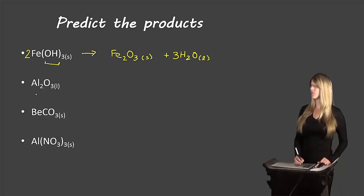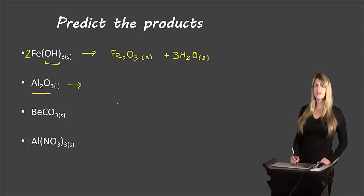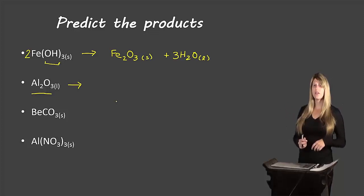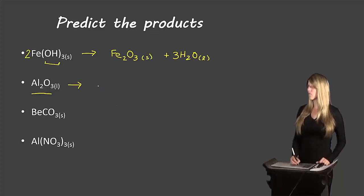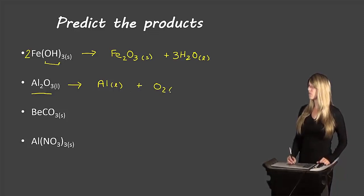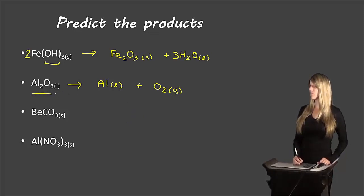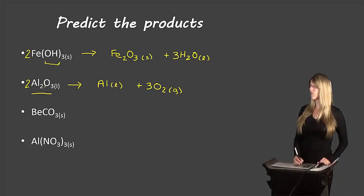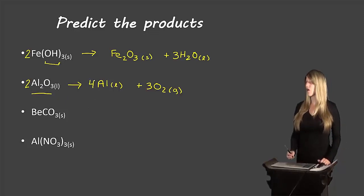The next example is aluminum oxide. We're dealing with a simple binary compound — aluminum and oxygen — so it will break down into its constituent elements: aluminum in the liquid state (thermal decomposition) and O₂ as a gas. To balance: we have three oxygen on the left and two on the right, so we place a coefficient of 2 on the left and 3 on the right, giving six oxygen on each side. For aluminum, we have 2×2 = four on the left, so we place a coefficient of 4 on the right. Balanced.